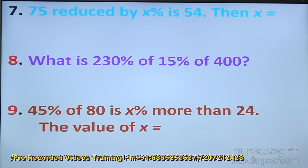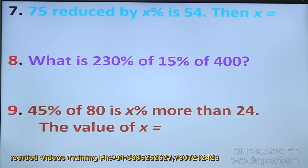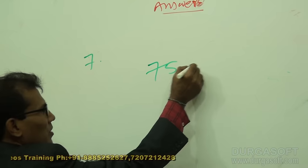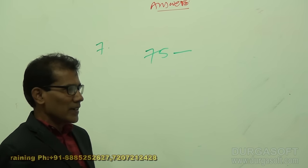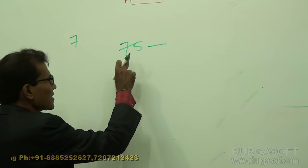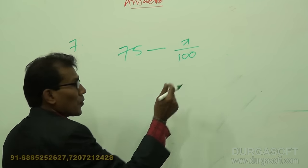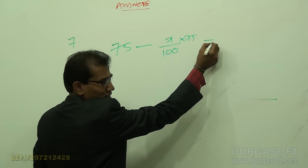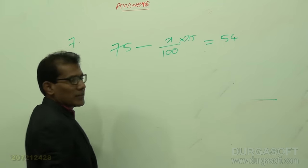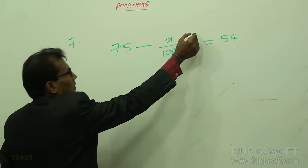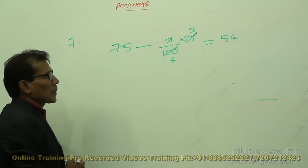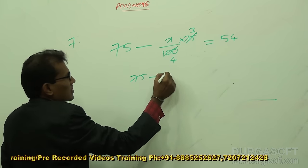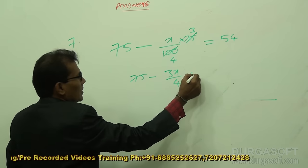We are doing question number 7. The original number is 75 and it is reduced — meaning we subtract. 75 reduced by x percent means x percent of 75 is subtracted. X percent of 75 is the amount reduced, and the result is 54. After simplification: 75 minus (3x/4) equals 54.